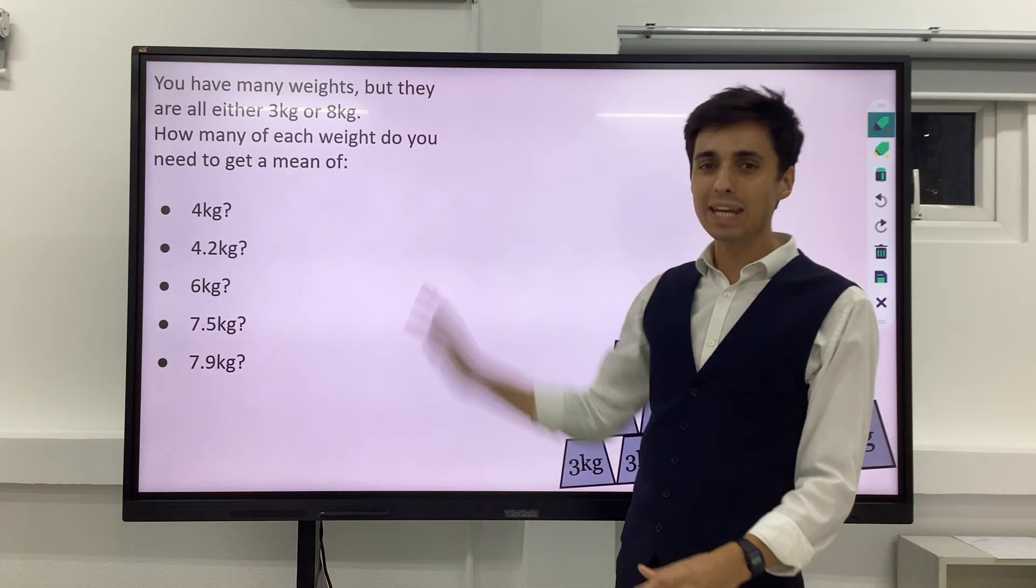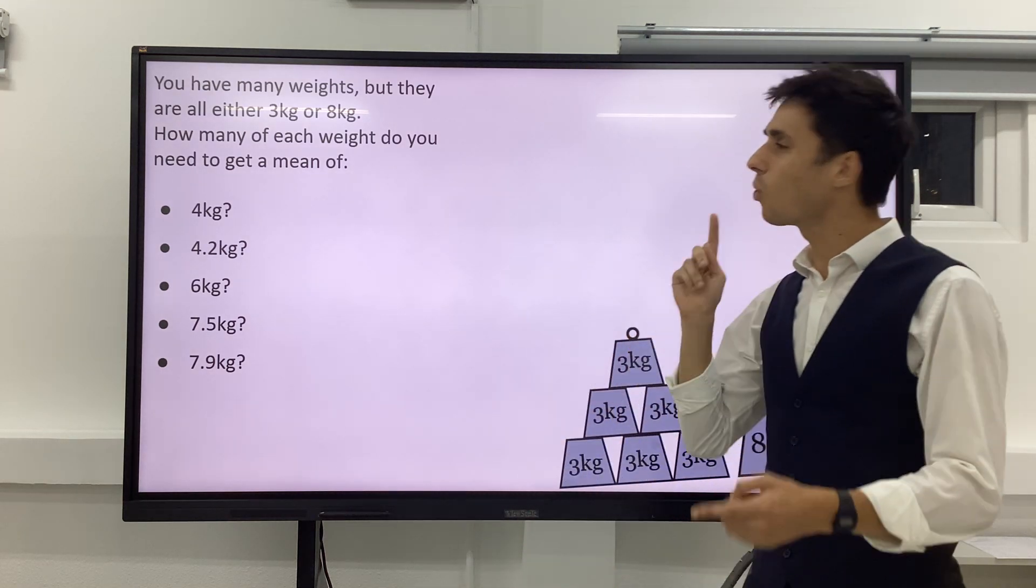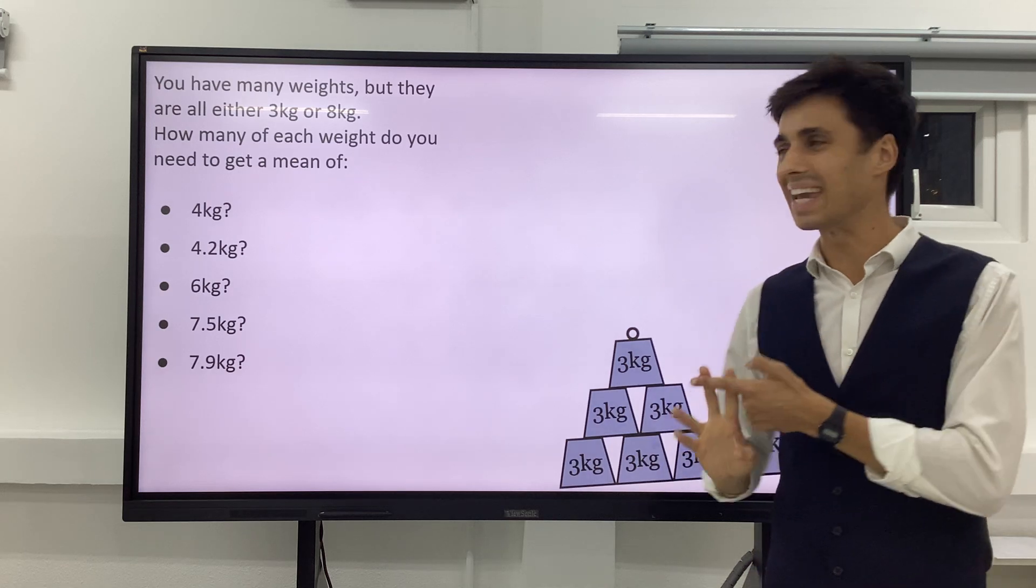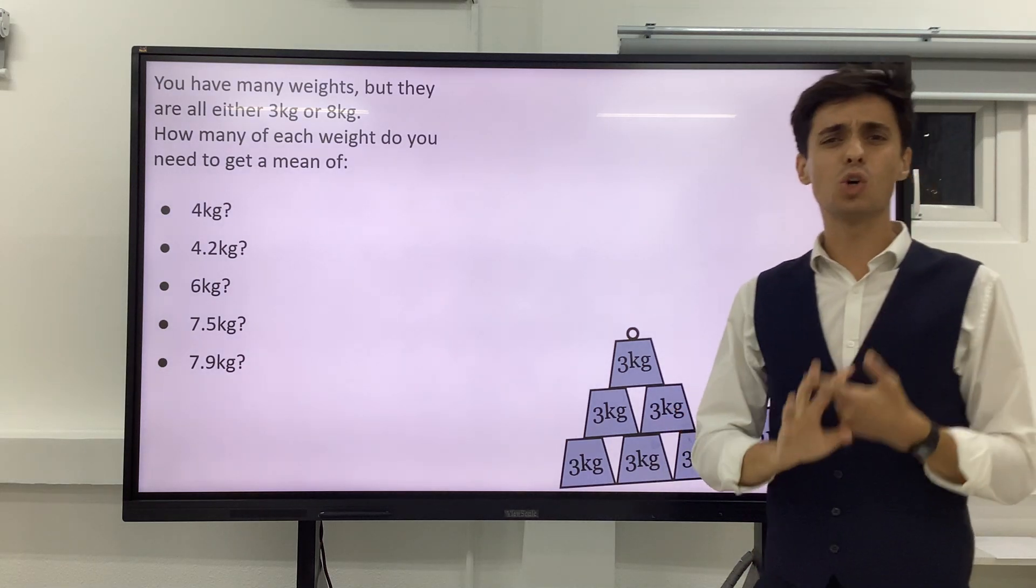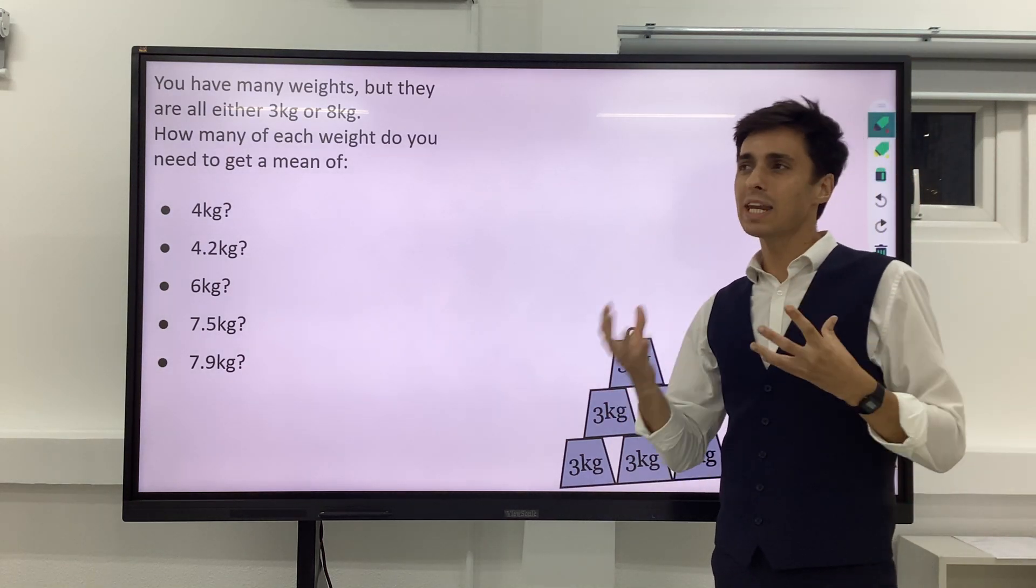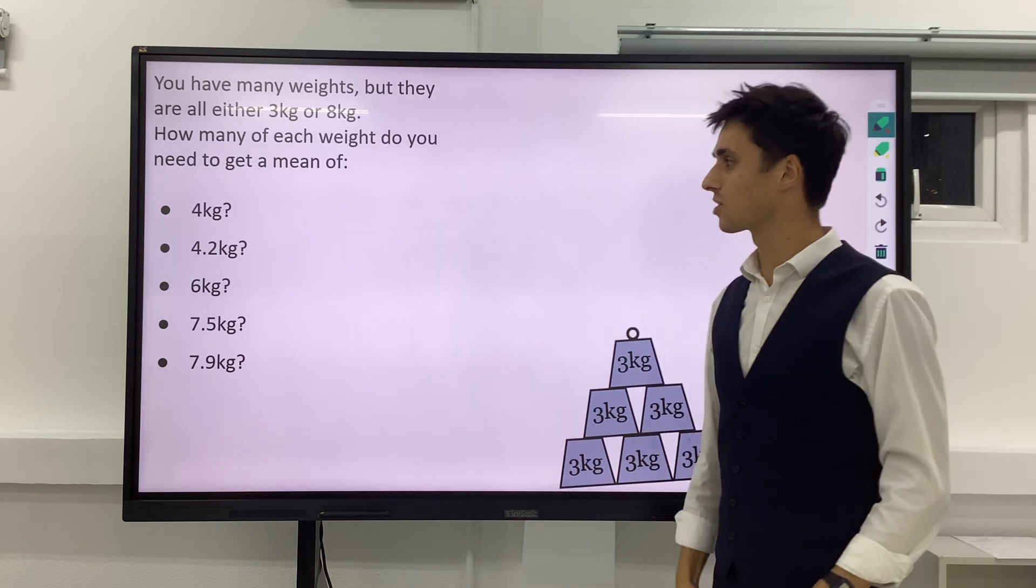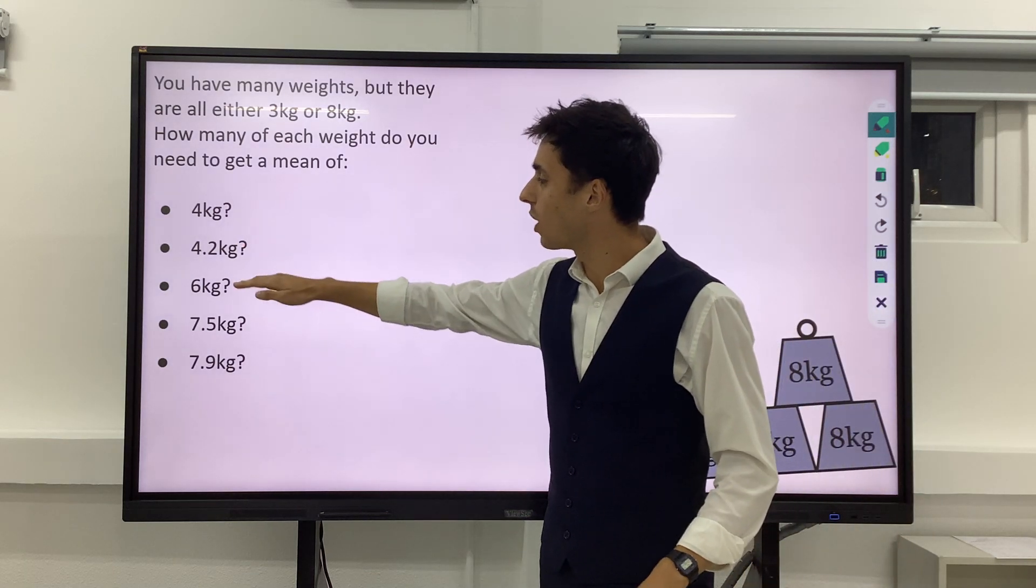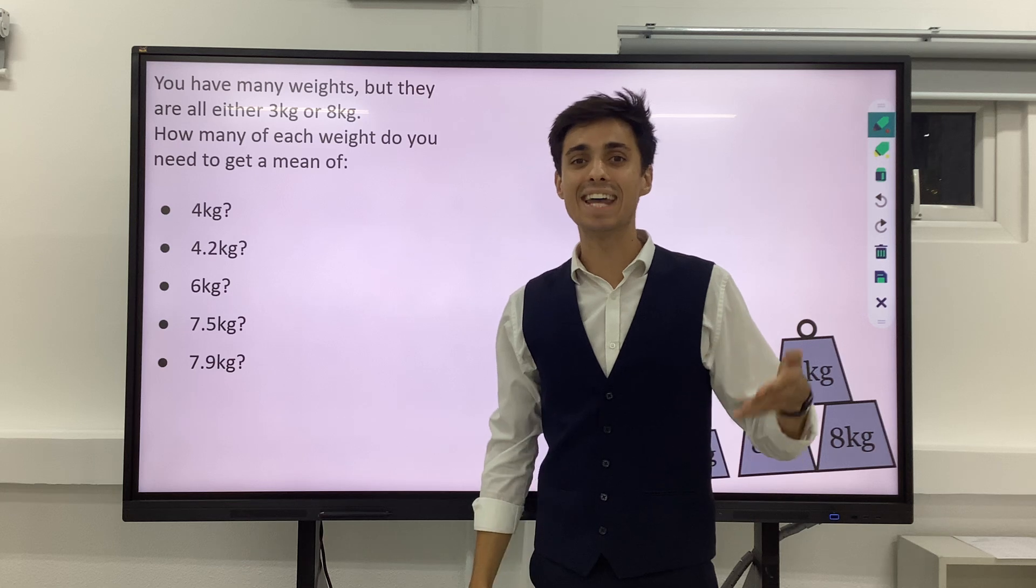We get given many weights in this problem, but they're all either 3kg or 8kg. The question is, how many of each different weight do we need to make these different numbers as our mean average weight?